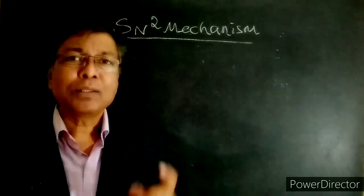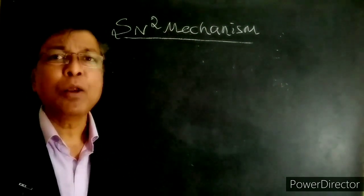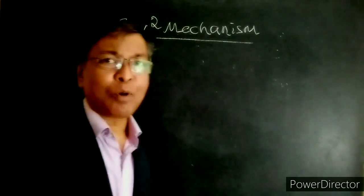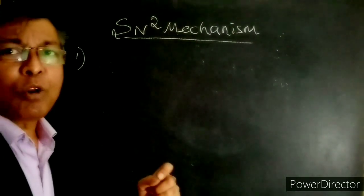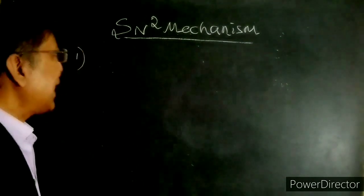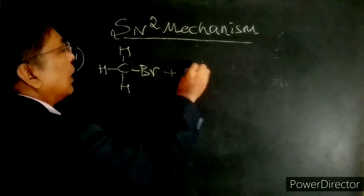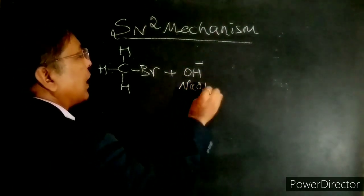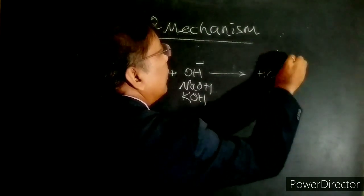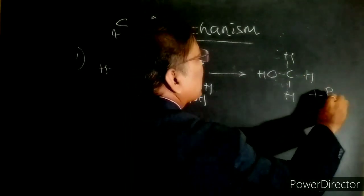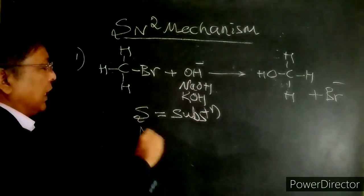Now let us discuss SN2 reaction mechanism. In the board examination, they may ask 'discuss SN2 reaction mechanism with a suitable example' or 'discuss alkaline hydrolysis of methyl bromide.' The first point to write is: alkaline hydrolysis of methyl bromide undergoes SN2 reaction mechanism. The nucleophile obtained from NaOH or KOH gives the product methanol plus Br⁻. S = substitution, N = nucleophilic, 2 = bimolecular reaction.